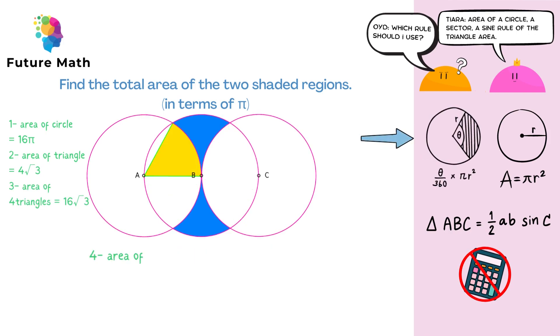Fourth step is to find the area of a sector, which is theta divided by 360 times pi times the radius squared. So it's 60 over 360 times pi times 4 squared, and this comes out as 8 pi over 3.